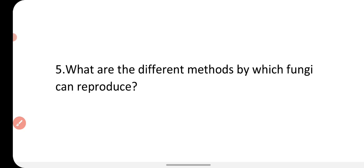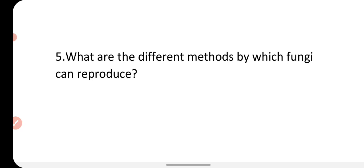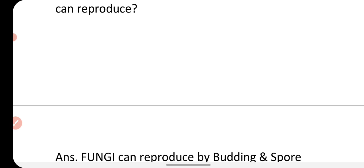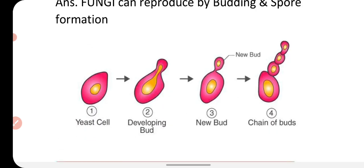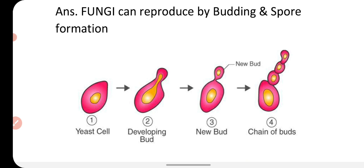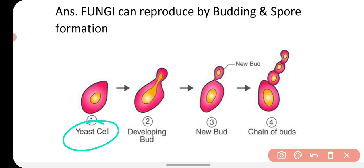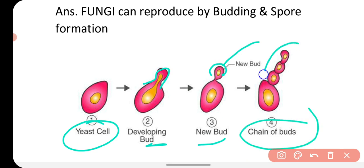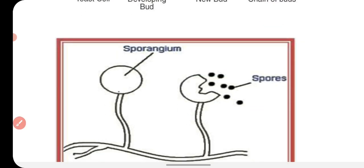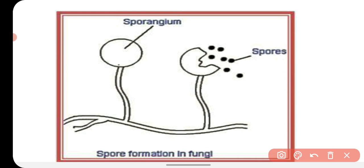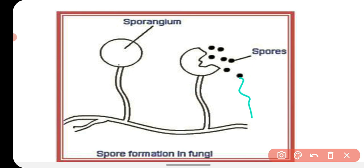The next question is: what are the different methods by which fungi can reproduce? The fungus can reproduce by several methods; two very common ones are budding and spore formation. In budding, yeast — which is a type of fungus — develops buds, and this new bud can grow into a new organism; chains of buds can also be formed. In spore formation, fungi make a sporangium containing lots of spherical spores; when these spores get favorable conditions they grow into a new fungus.